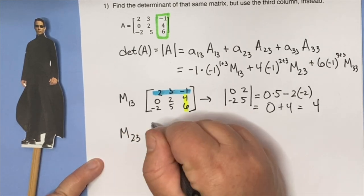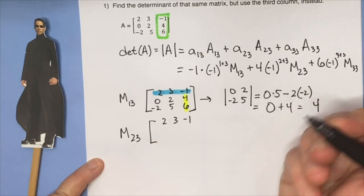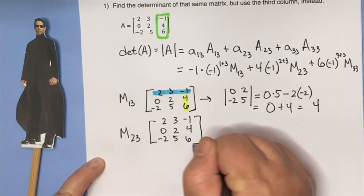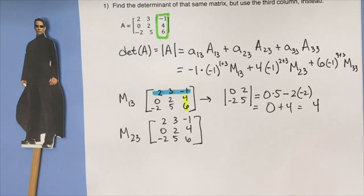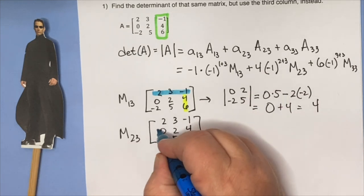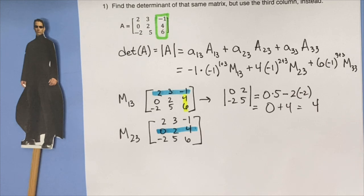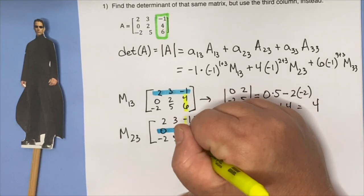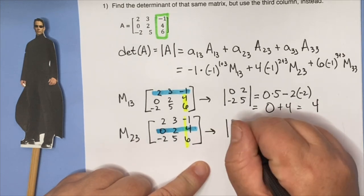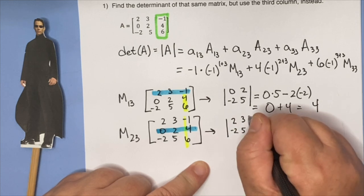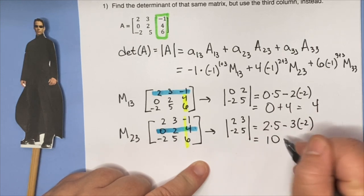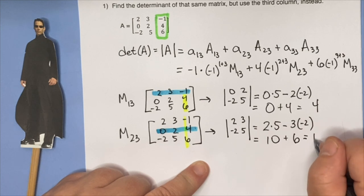The minor at (2,3): we get rid of the row and the column that are involved with this value — the 4 sitting in row 2. So we get rid of row 2 and also the third column. That gives us the determinant of 2, 3, negative 2, 5, which is 2 times 5 minus 3 times negative 2. So that's 10 plus 6, which is 16.